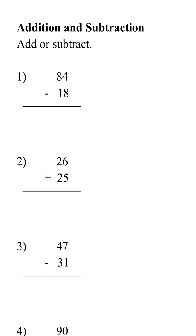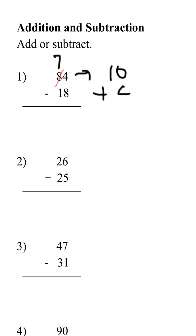We always have to remember that we have to start with the 1's place. So 4 minus 8 — the top number needs to be bigger than the bottom number. But here we can see that 4 is less than 8, which means we're going to have to borrow 1 tens from 8. So 8 minus 1 is 7, because we're borrowing 1 tens from 8.